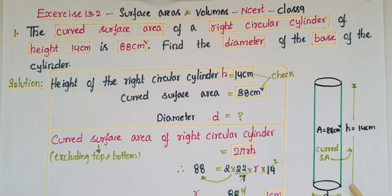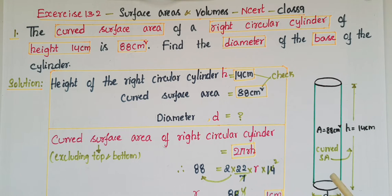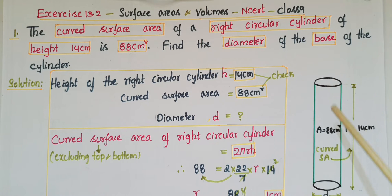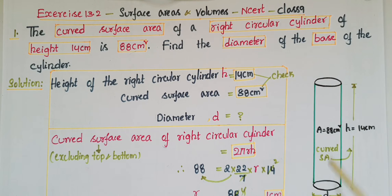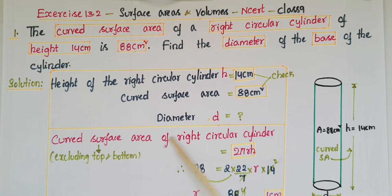Here the height of the right circular cylinder is given as 14 centimeters, and the curved surface area is given as 88 centimeter square. Curved surface area means it is excluding the top area and the bottom area. We have to find the diameter of the base.